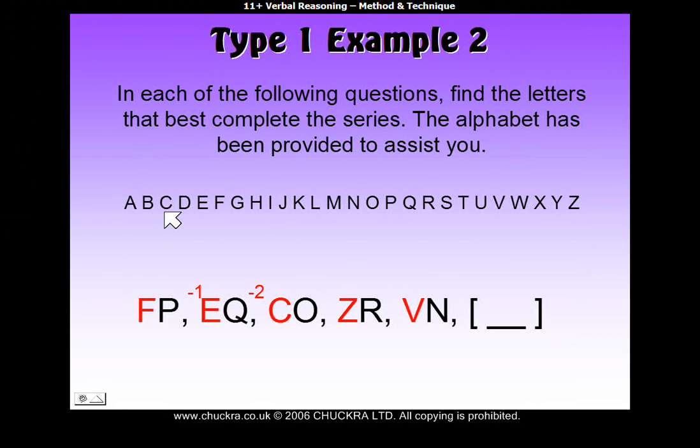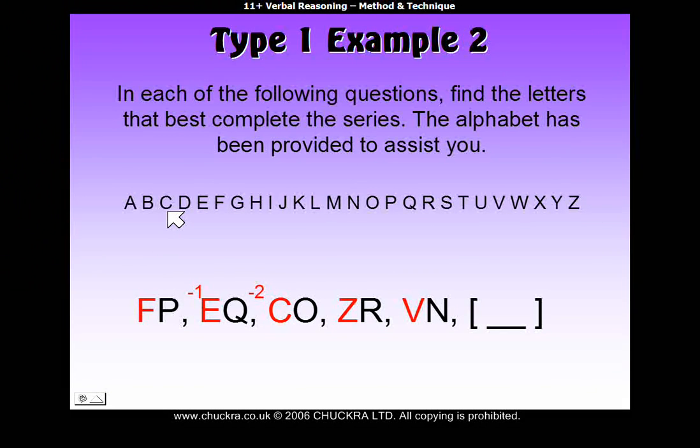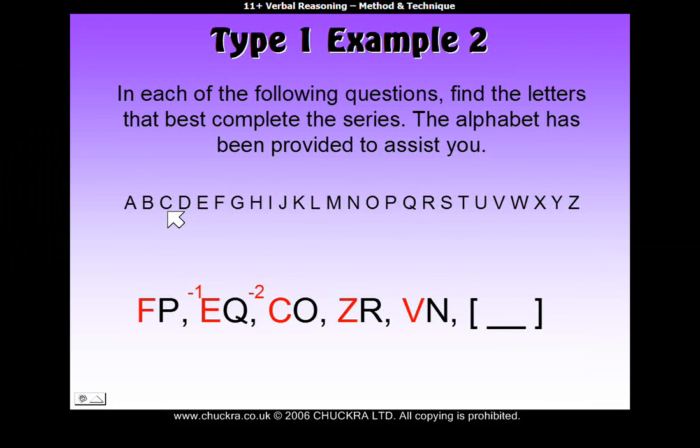And when we get to the end of the alphabet, just loop round and start again. So, what I mean is, starting at C, we go backwards one, two, and then loop round three to get to Z. So, from C to Z, it's backwards three.